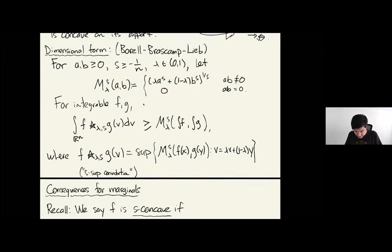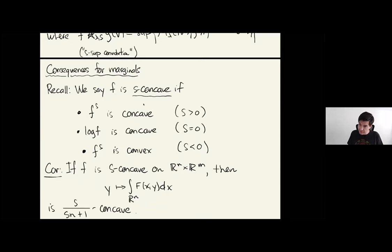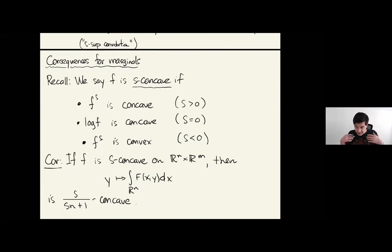A function f is called S-concave if f to the power s is concave when s is positive; log concave when s is zero; and when s is negative, f to the s is convex. It's an easy exercise that when you have an S-concave function, the marginal also enjoys concavity properties with explicit dimensional dependence. When s equals zero, this recovers the fact that marginals of log concave functions are log concave — recovering consequences of the Prékopa-Leindler inequality. Rinott's approach also applies to Borell-Brascamp-Lieb inequalities, using powers when you have concavity properties.